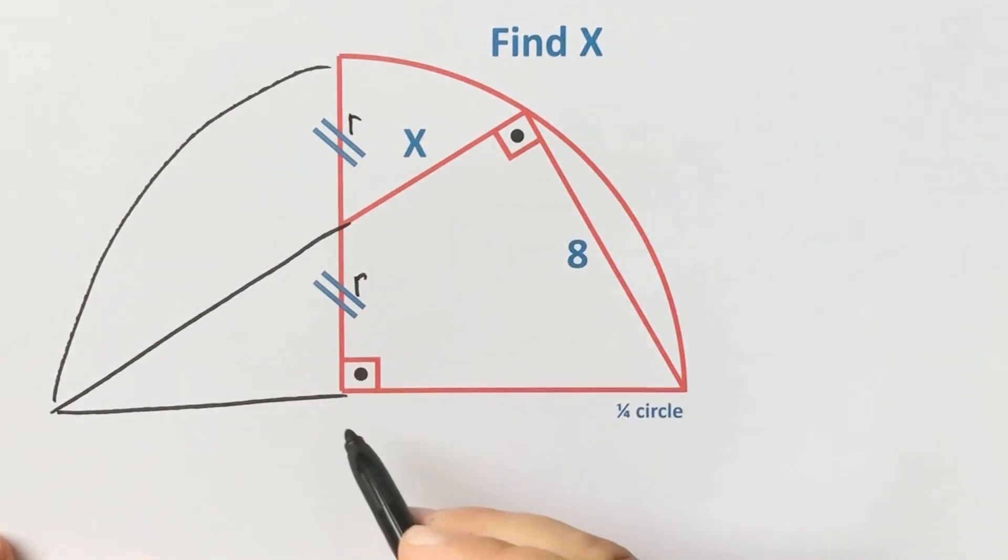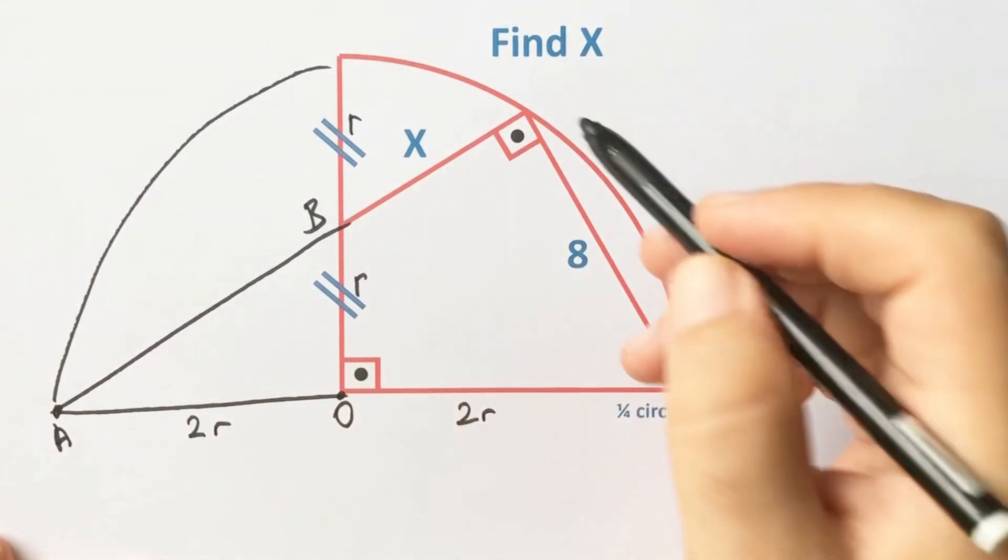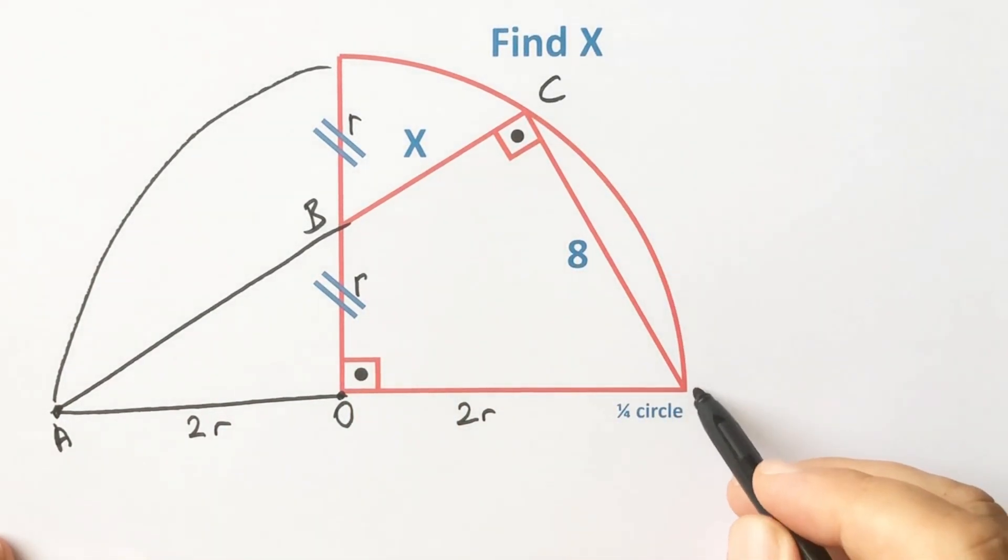The radius here is R, and this radius is 2R. The horizontal distance is 2R. Let's mark point A here, point B here, point C here, and point D here.